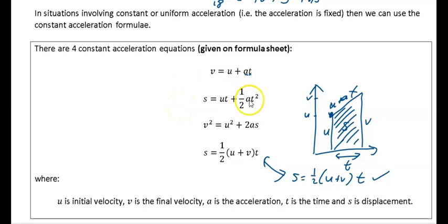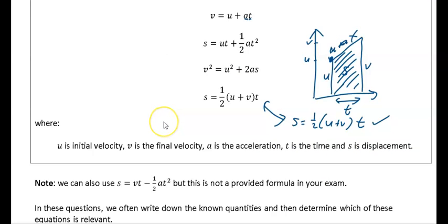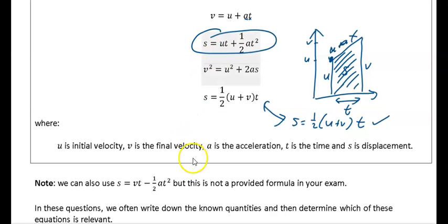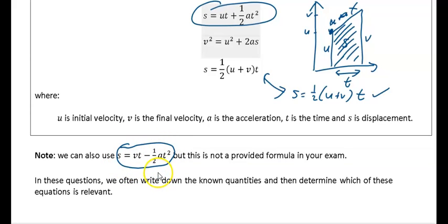One more very useful formula which is not given to you: s = vt − ½at². This is very similar to s = ut + ½at².